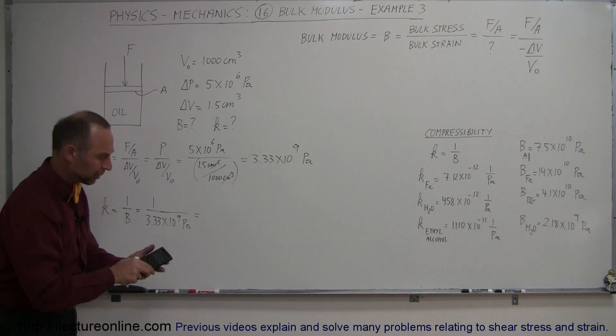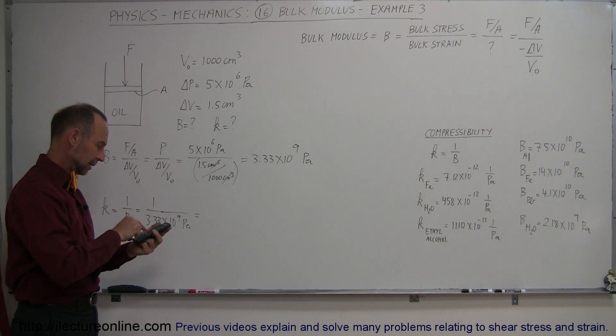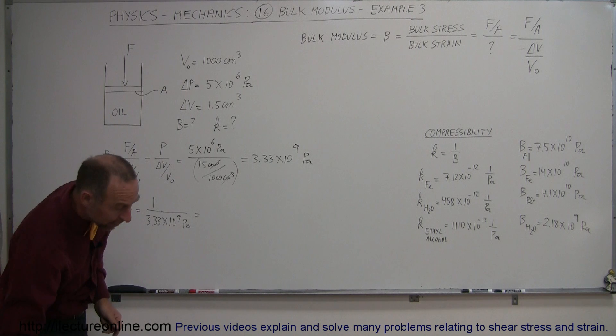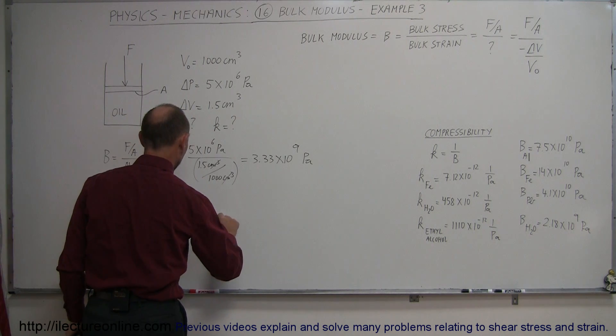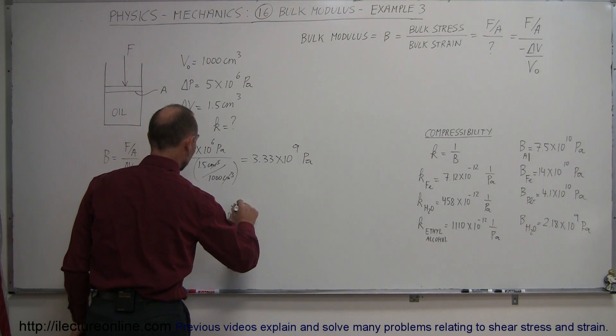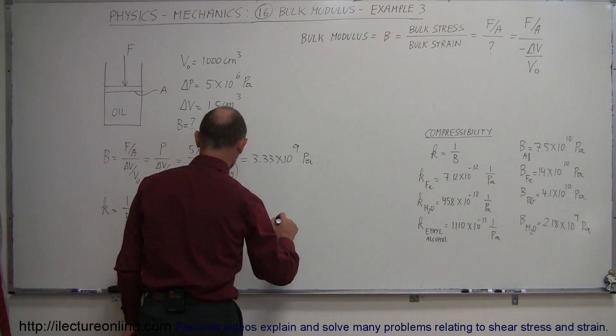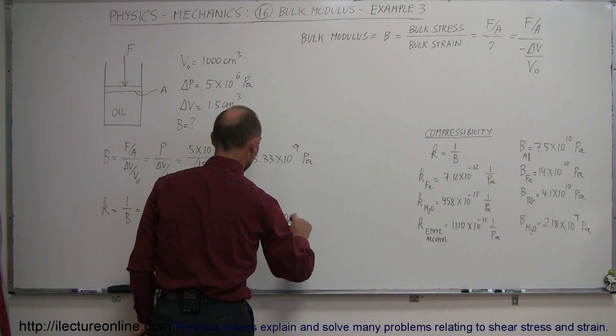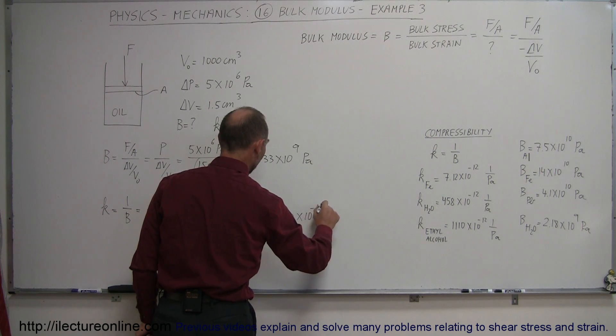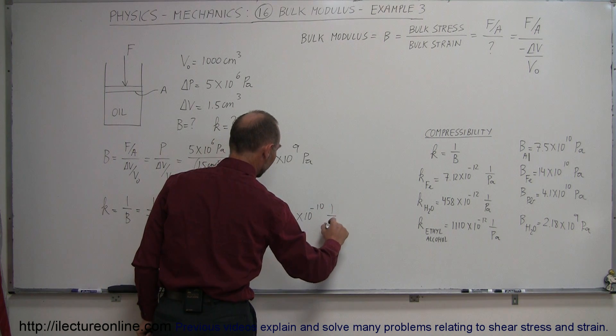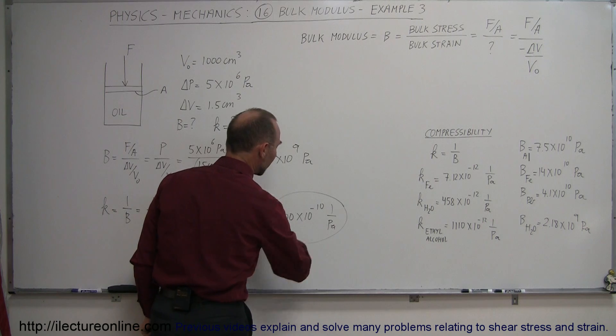So if we take the inverse of this number, we get 3 times 10 to the minus 10, 1 over pascals, or giving it the same kind of exponent, that would be 300 times 10 to the minus 12 per pascal, and that would then be the compressibility.